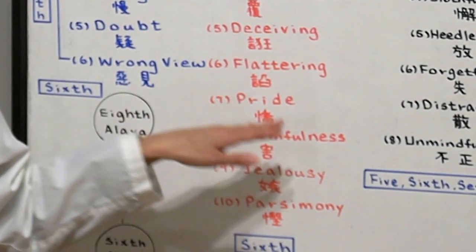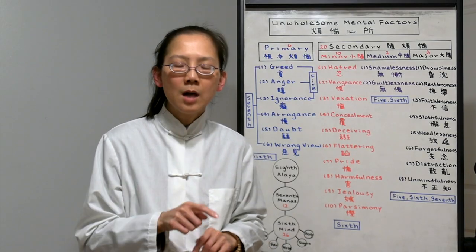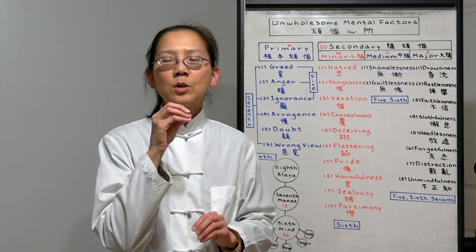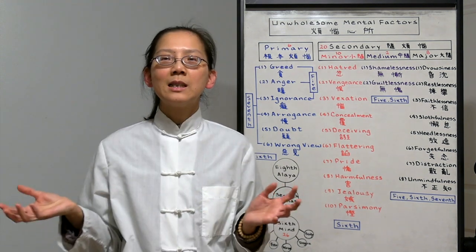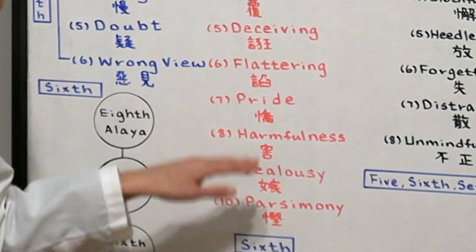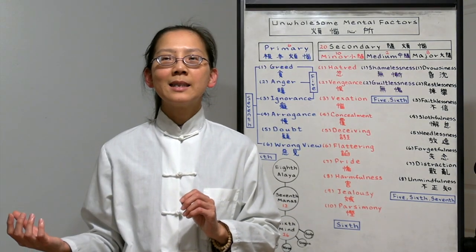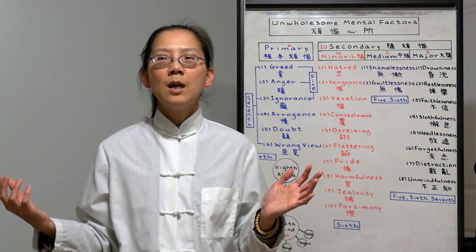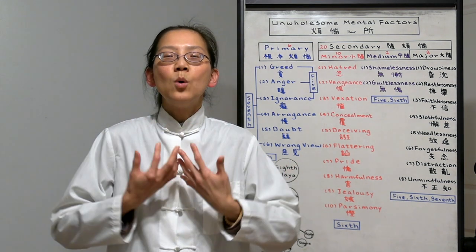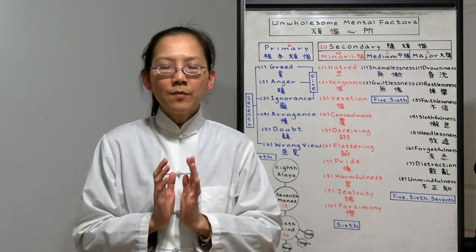Eight is harmfulness. When we have vexation, we might want to cause harm to others. We want to kill. We want to do all these things that are very violent. Nine is jealousy. Jealousy is also anger. We do not want to see others being successful because we think we should be the only one that should be successful. That's because of our selfishness.